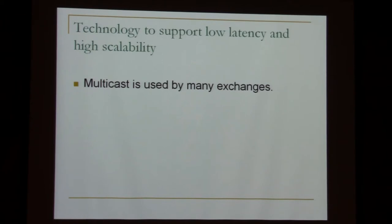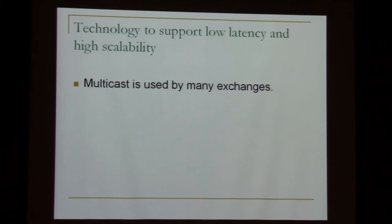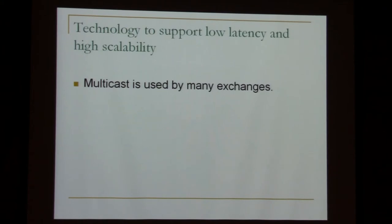Briefly: TCP is point-to-point — one server connects to another server to send data. Multicast is one-to-many. For market data especially, imagine I have a price update and thousands of customers are interested — Bloomberg, Reuters, Goldman Sachs, Citibank. If they all connect to the server via TCP, that's thousands of persistent connections. The benefit of multicast is that you only need to send one copy and everybody gets it.